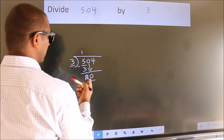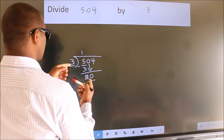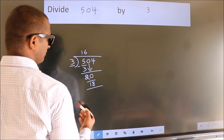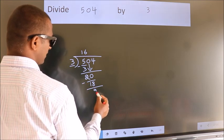A number close to 20 in 3 table is 3, 6, 18. Now, we subtract. We get 2.